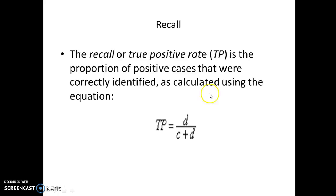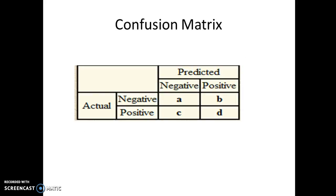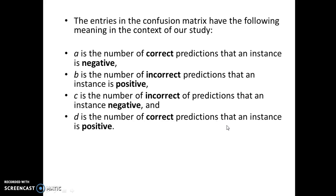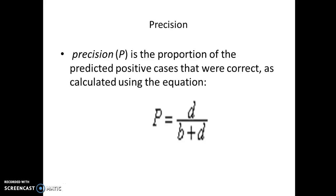Recall, or the true positive rate, is the proportion of positive cases that were correctly identified. It is calculated using the equation D / (C + D). This means we take D — the correctly predicted positives — over all actual positives, which is C plus D. That is why D upon C plus D is the recall.